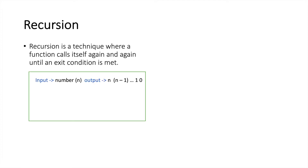Suppose we have to write a function which takes a number as input and prints out all the numbers starting from that number up to 0. That is, if the input is 3, the function will output 3, 2, 1, 0 — starting from 3, we are printing all the numbers up to 0, which means we are subtracting 1 from the starting number at every step.